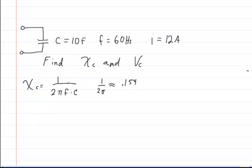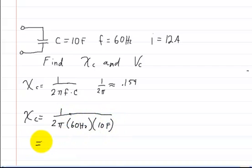The capacitive reactance is equal to 1 over 2π, then multiply it by the frequency and the capacitance. So the frequency is 60 hertz, and the capacitance is 10 farads. If you plug that into your calculator, you're going to get 2.65 times 10 to the negative 4 ohms.